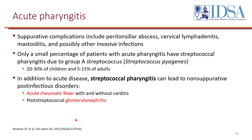Acute pharyngitis can also have complications including peritonsillar abscess, cervical lymphadenitis, mastoiditis, and possibly other invasive infections, as these are structures in proximity to the pharynx that bacteria can potentially affect.